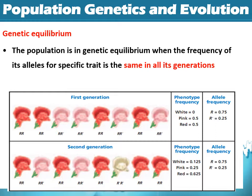Genetic equilibrium is when the frequencies of the alleles for a specific trait are the same across all generations. Genetic equilibrium can happen for a certain number of generations — it's not entirely impossible in nature, though it normally doesn't last long. For example, looking at a generation of flowers: we have four red and four pink in the first generation — phenotypic frequency of 0.5 and 0.5. The allele frequency is 0.75 for the red allele and 0.25 for the white allele. After a reproductive phase, in the second generation we see five red, two pink, and one white — a phenotypic change.